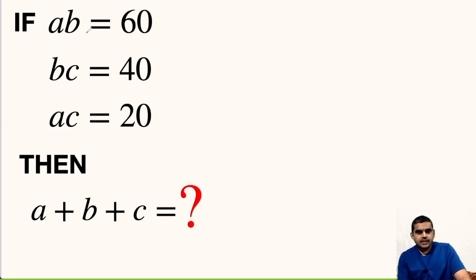Here AB is given as 60, BC is given as 40, and AC is equal to 20. We have to find the value of A plus B plus C.